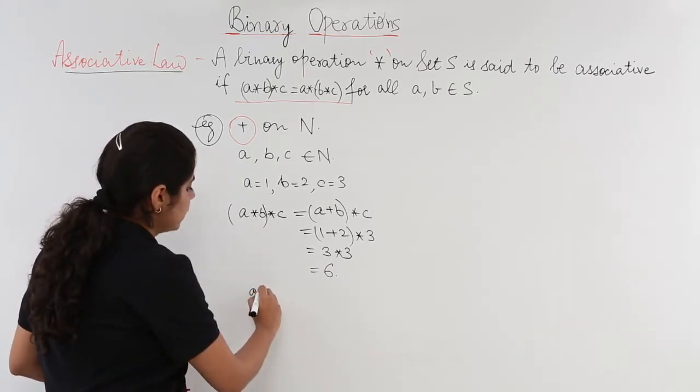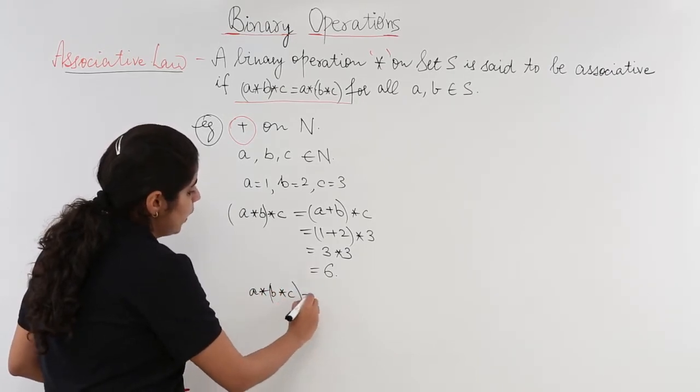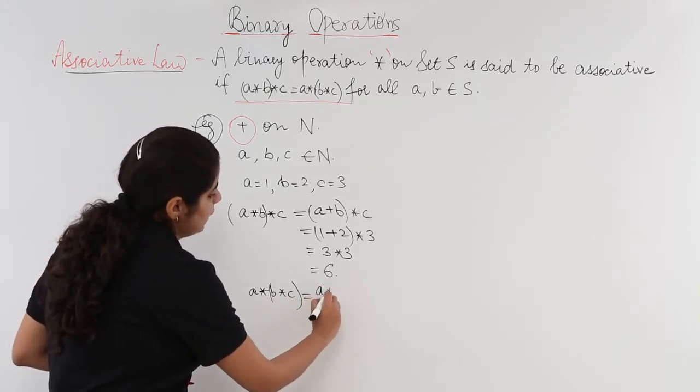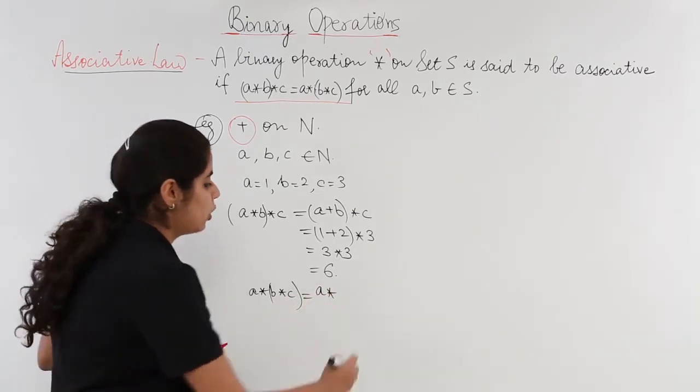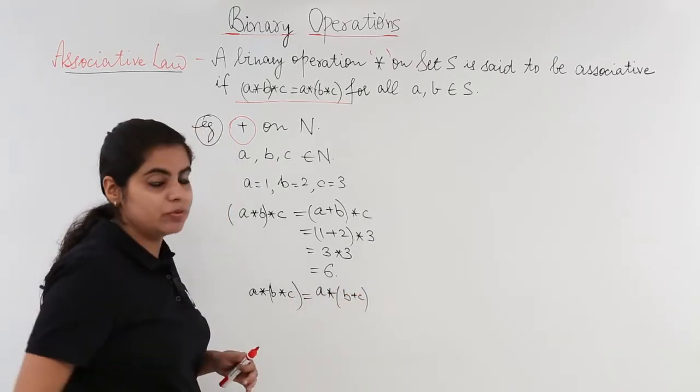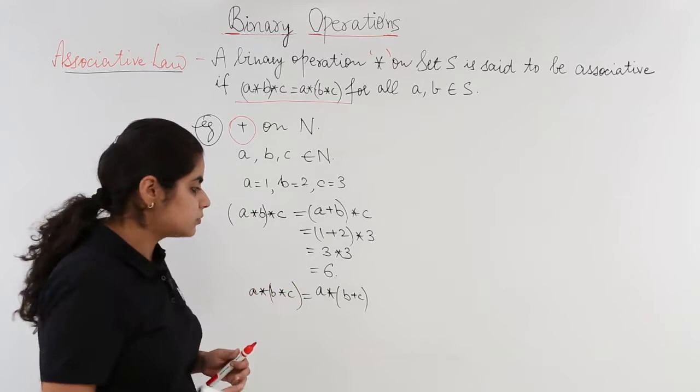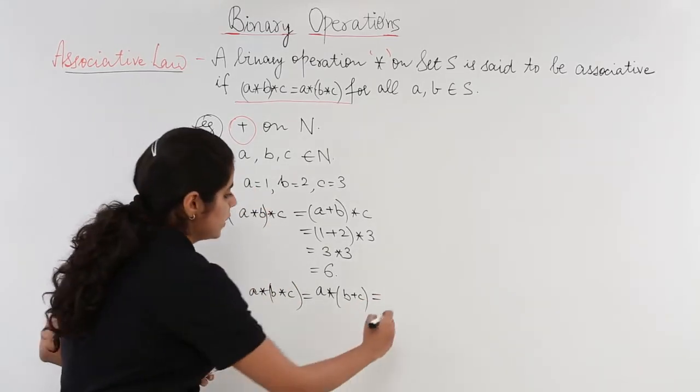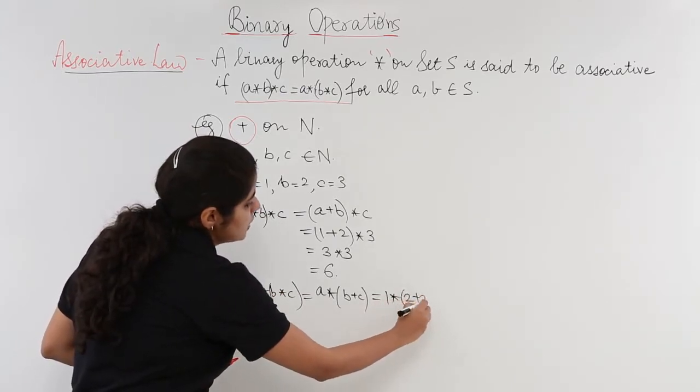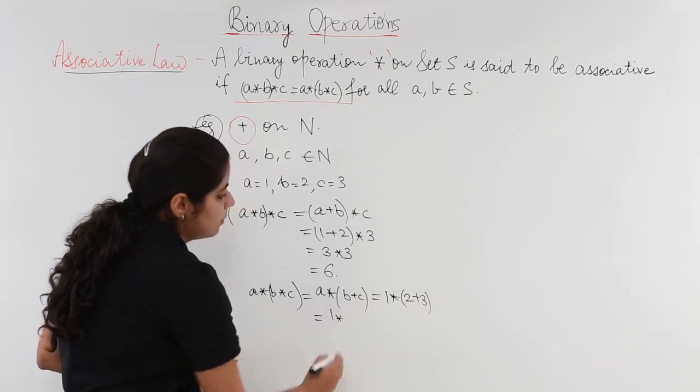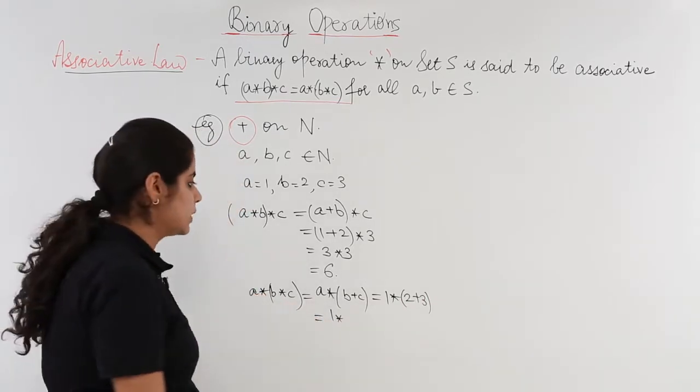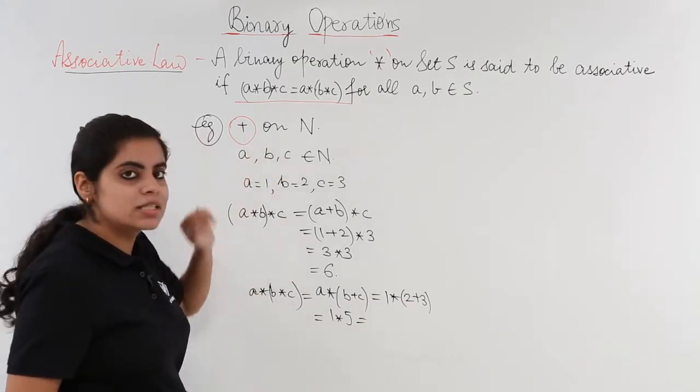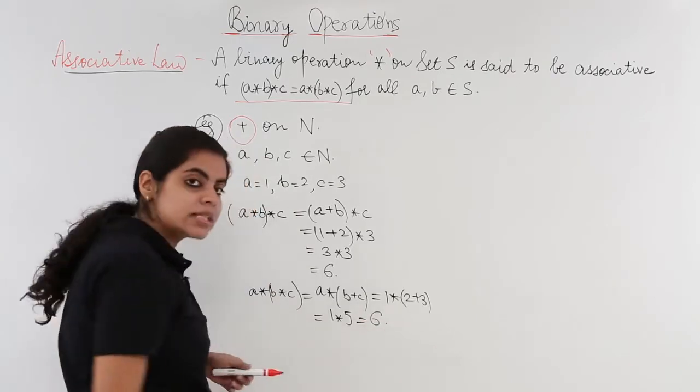What about solving A star B star C where B and C are solved first? Then A star will remain as it is, and B star C will become B plus C. We are basically solving the bracket first. Put the values: A is 1, B is 2, C is 3. So 1 star (2 plus 3). Now, 2 plus 3 is 5. Now, 1 star 5. Star means plus. 1 plus 5 is 6.